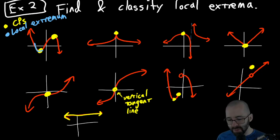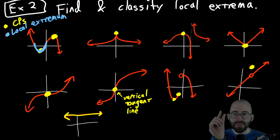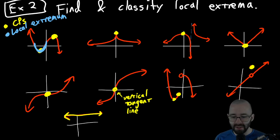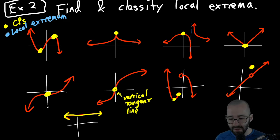If we zoom in to only this blue portion of the graph, notice that the critical point — the yellow point — is a minimum for just this small portion of the graph. Because if we're just looking at this portion, that critical point has a smaller function value than anything around it. So we would say that this critical point is also a local min.